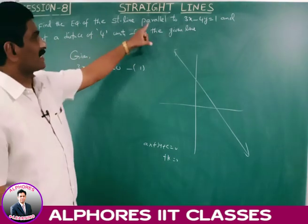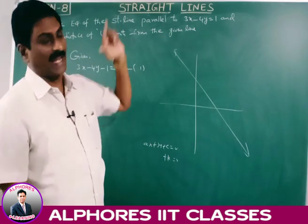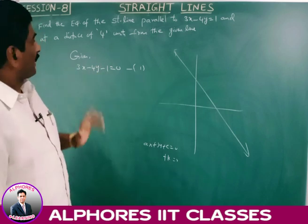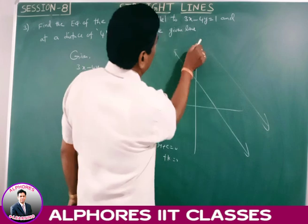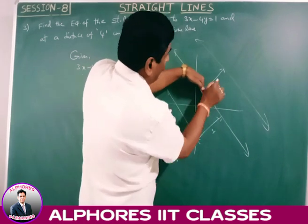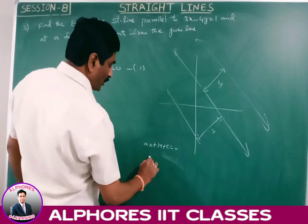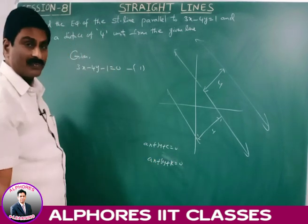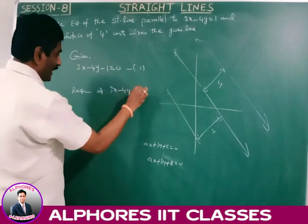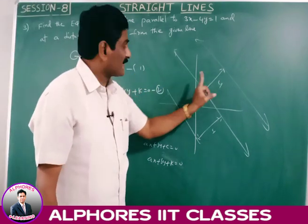Third problem: find the equation of the straight line parallel to 3x - 4y = 1 and at a distance of 4 units from the given line. The given line is 3x - 4y - 1 = 0. The required line is parallel to this and 4 units away — there are two possibilities, one on each side.